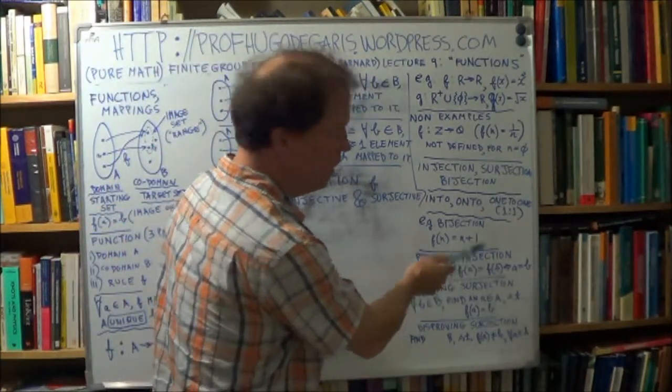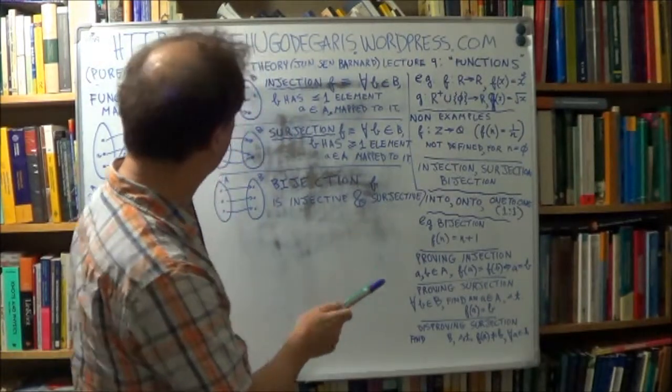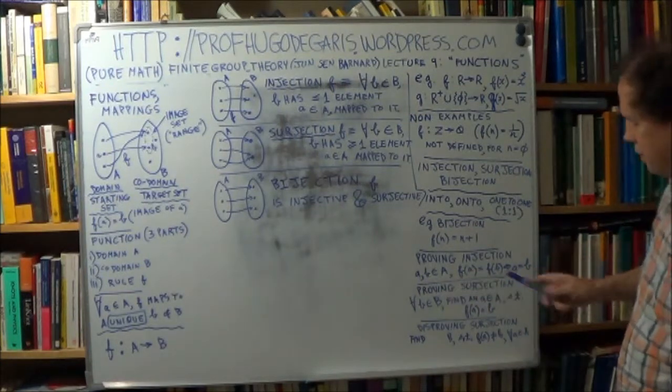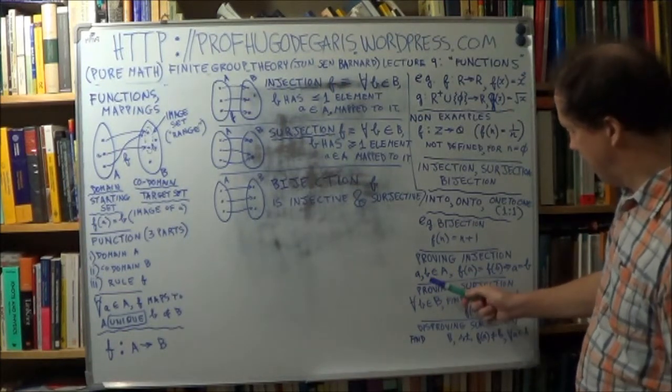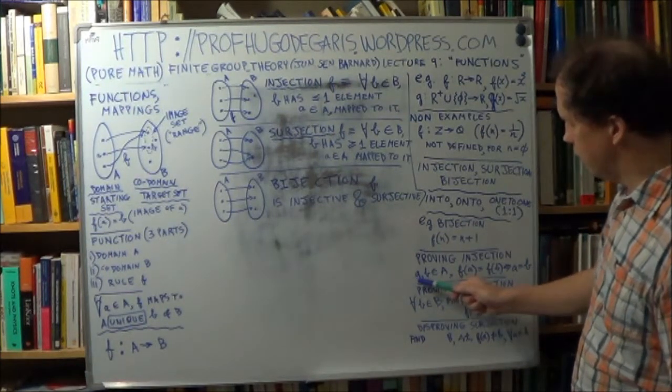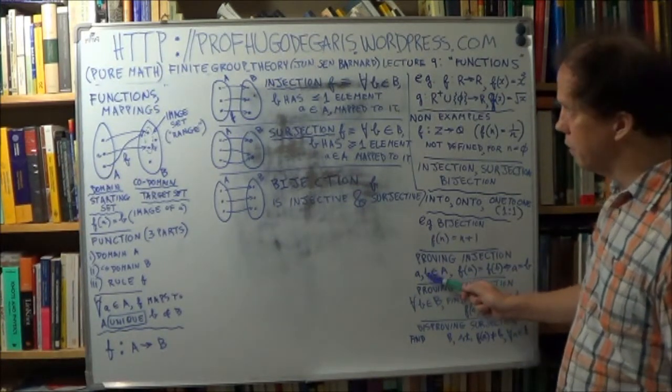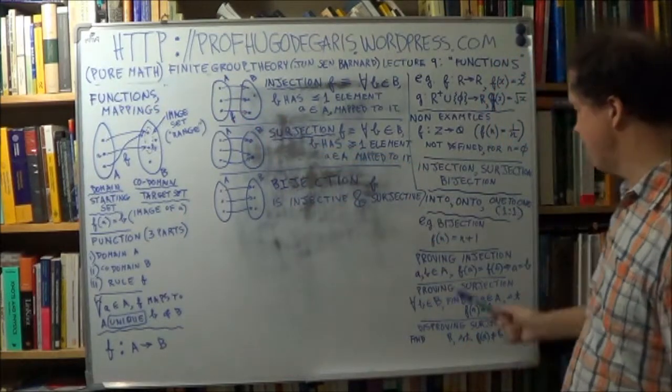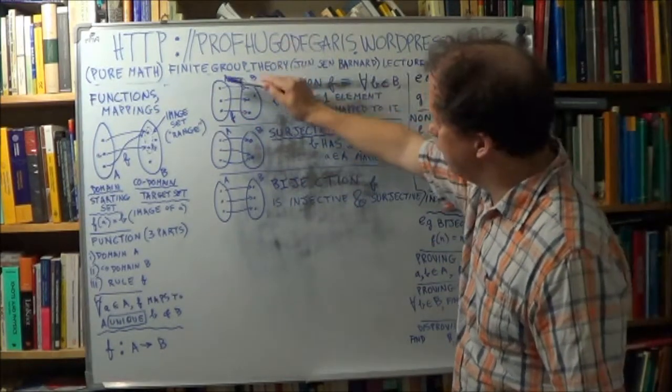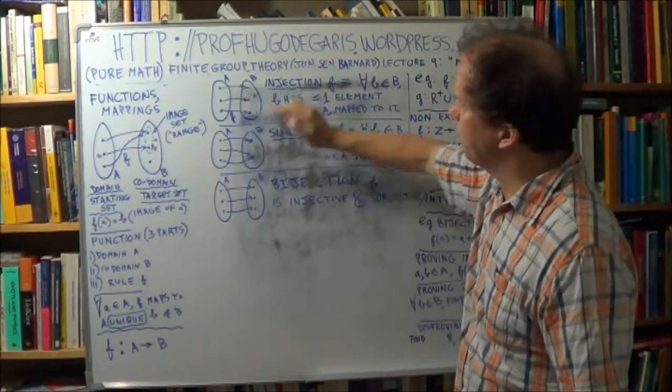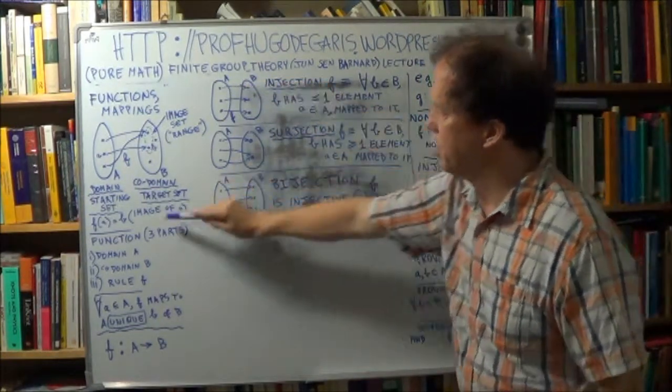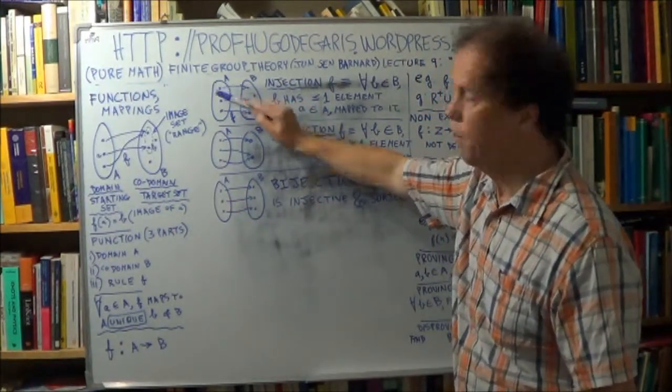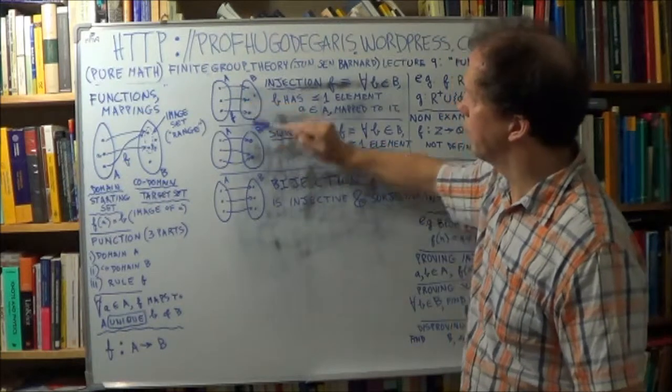So how do you prove that a function is injective? Well, I've written it down here. So take, take any two, you know, random two elements of your domain here, let's say. And let that be little a, let that be little b. So this point here is your image. It's your image of this, and this point here would be the image of that.